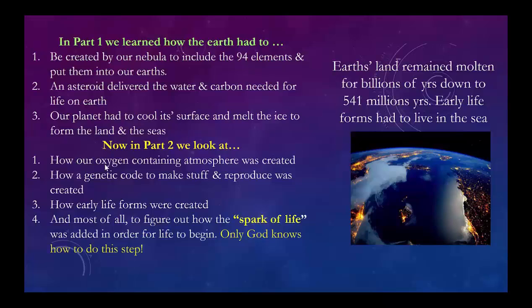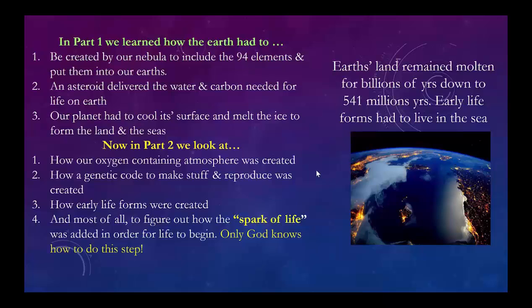Now in part two, we're going to look at where oxygen came from. How did we get oxygen into the atmosphere? We're going to learn how a genetic DNA code was made, was created to make stuff and reproduce. We're going to also learn what the early life forms looked like, created virtually out of nothing, just out of the primordial soup within the sea. And we'll look at the spark of life. The Earth's land remained molten for billions of years, down to 541 million years, when creatures in the seas were finally able to live on land, particularly the plants, which began to come on the land and at the same time create all the oxygen.